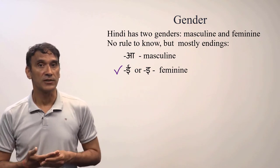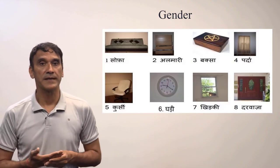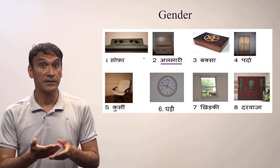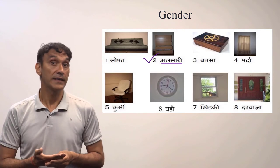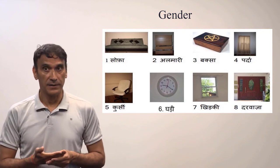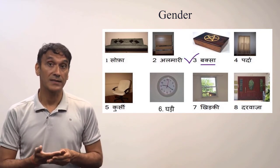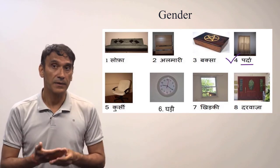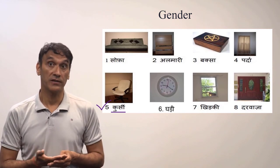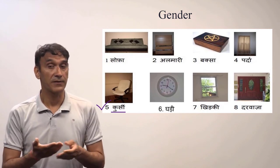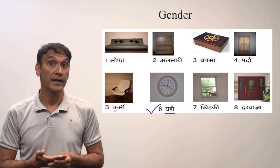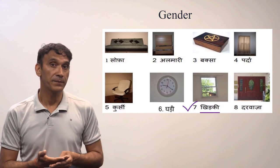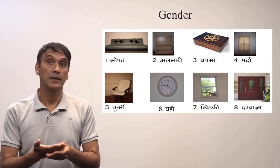Here we have some examples. Number one: sofa — ends in 'a', so it's masculine. Number two: almari (closet) — ends in 'e', so it's feminine. Number three: baksa (box) — ends in 'a', masculine. Number four: par (curtain) — ends in 'a', masculine. Number five: kursi (chair) — ends in 'e', feminine. Number six: ghari (watch or clock) — ends in 'e', feminine. Khidki (window) — feminine. And darwaza (door) — ends in 'a', masculine.